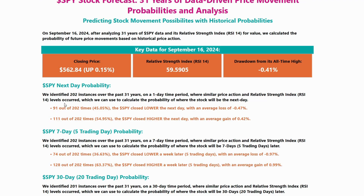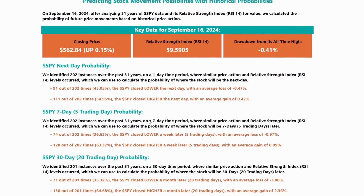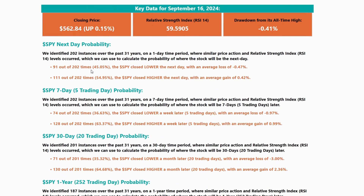From this, we calculated that 91 out of 202 times — which is 45.05% of the time — SPY closed lower the next day with an average loss of 0.47%. 111 out of 202 times, or 54.95% of the time, SPY closed higher the next day with an average gain of 0.42%.